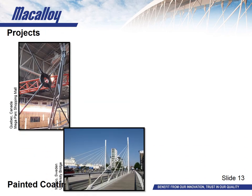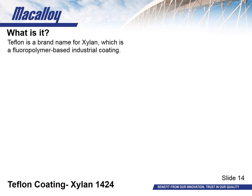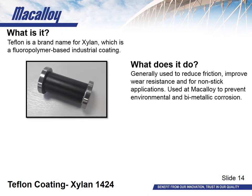Here are a few examples of the painted projects we have supplied over the years. Teflon is a brand name for Xylan, which is a fluoropolymer based industrial coating generally used to reduce friction, improve wear resistance and for non-stick applications. We use Xylan at McEloy to prevent environmental and bimetallic corrosion. An example of this is coating stainless steel pin sets that are being used with carbon steel gusset plates, creating a barrier between the two dissimilar metals and preventing them from reacting with one another. It is worth noting that the Teflon coating is an alternative to your standard isolation sleeves — so you don't have to worry about losing the isolation sleeve on site, and you're able to use the same gusset plate dimensions as standard, so you don't have to worry about modifying the plate and hole size.